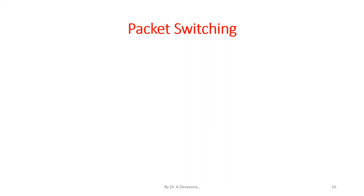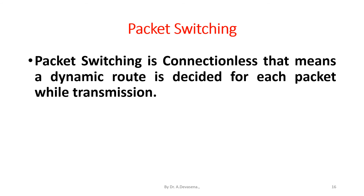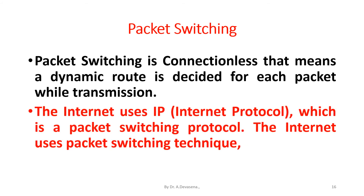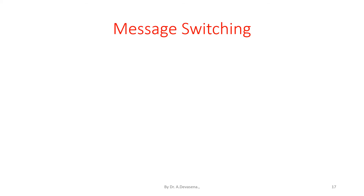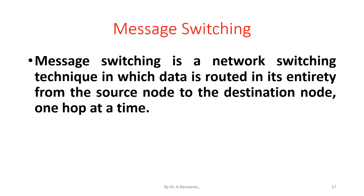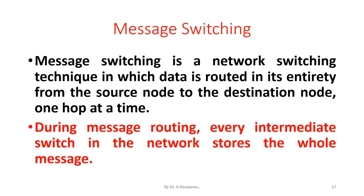Packet switching is connectionless — a dynamic route is decided for each packet during transmission. The internet uses IP, that is internet protocol, which is a packet switching protocol, and therefore uses the packet switching technique. Message switching is a network switching technique in which data is routed in its entirety from the source node to the destination node one hop at a time. During message routing, every intermediate switch in the network stores the whole message.